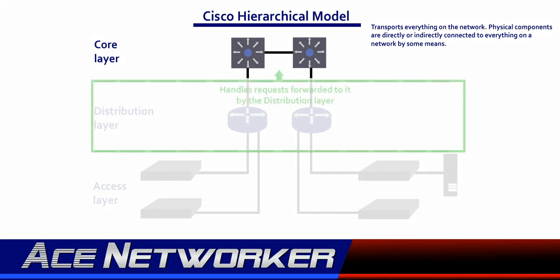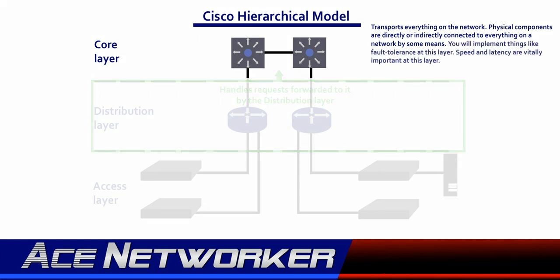Traffic transported on the core layer is common to the majority of users on that network. User data is processed at the distribution layer, and the core layer gets requests forwarded to it by that distribution layer when needed. If the core layer or backbone has any issues with functionality or connectivity, every single user on the network can be affected. In a majority of cases, the core layer is where you'll implement things like fault tolerance. Since large volumes of traffic are seen at the core layer, speed and latency become extremely important here.